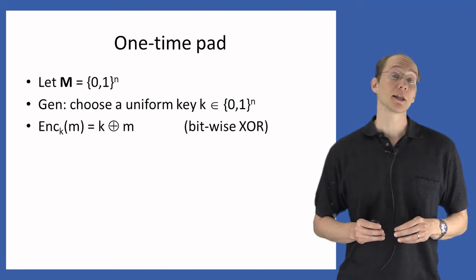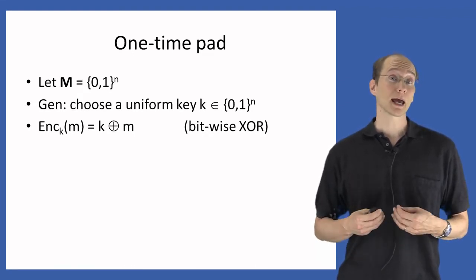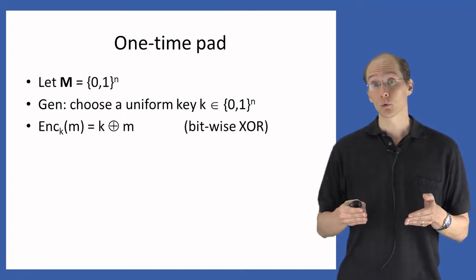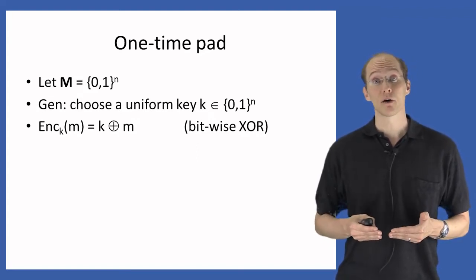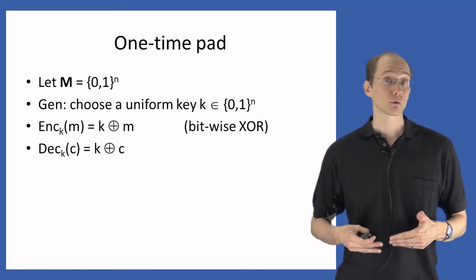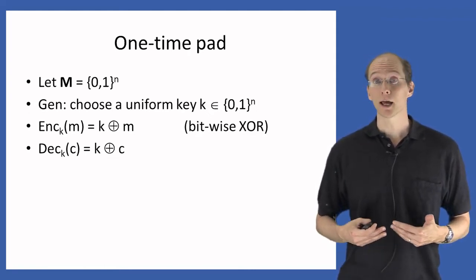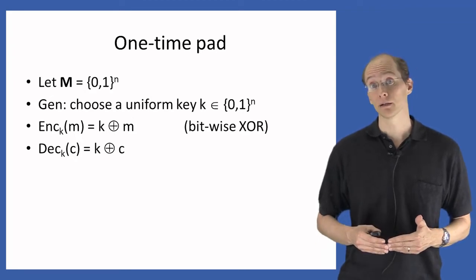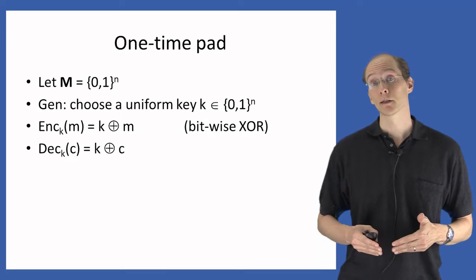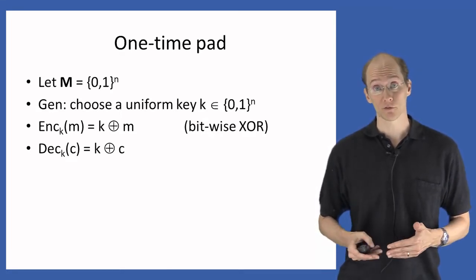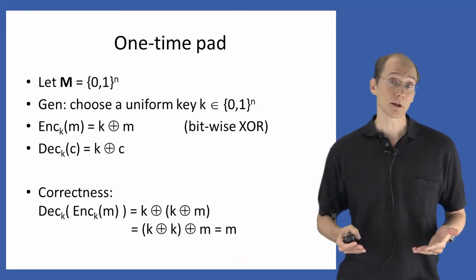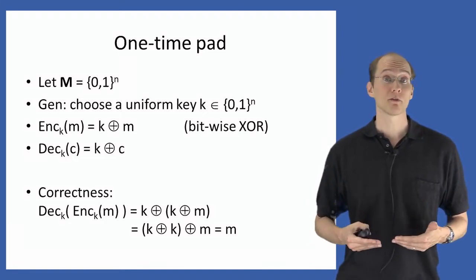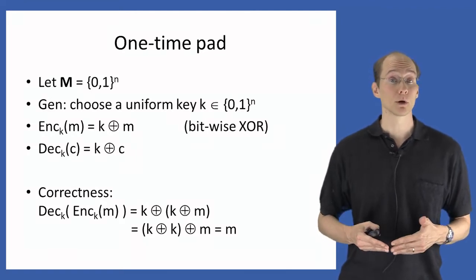To encrypt a message m using the key k, we simply XOR the key with the message bitwise, so the i-th bit of the ciphertext equals the XOR of the i-th bit of the key with the i-th bit of the message. Decryption just reverses the process: to decrypt a ciphertext c using key k, both strings of length n, we simply XOR them together. The message we output is simply the key XOR'd with the ciphertext. You can verify that this scheme is indeed correct — when we decrypt the encryption of a message m using the same key for both encryption and decryption, we recover the original message.